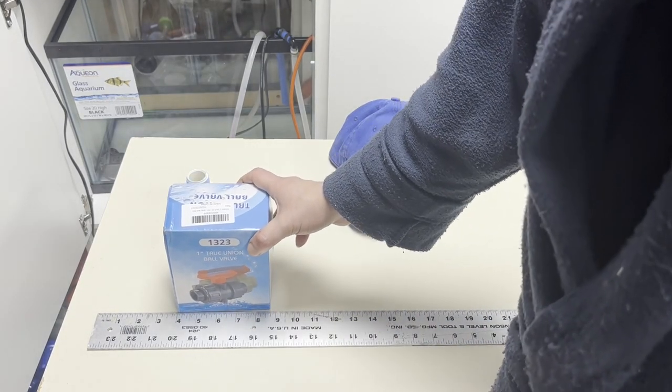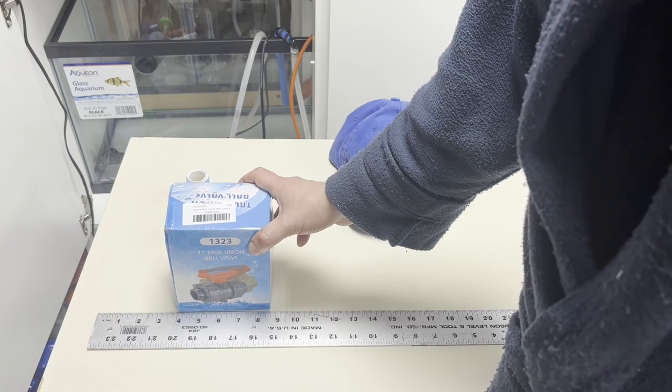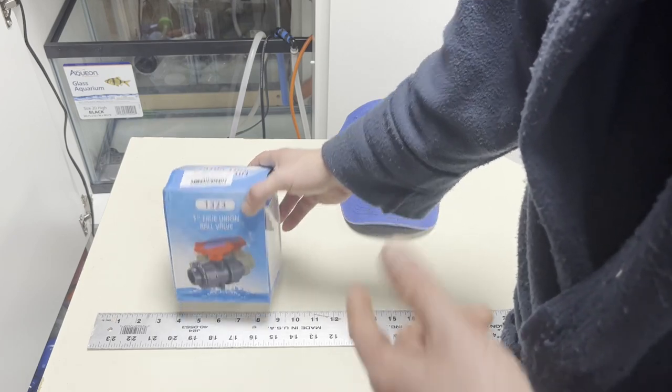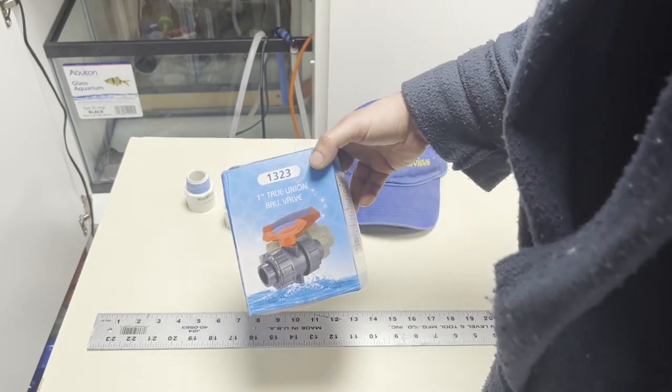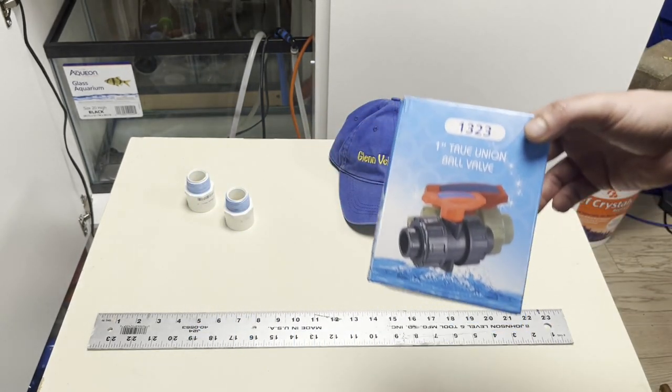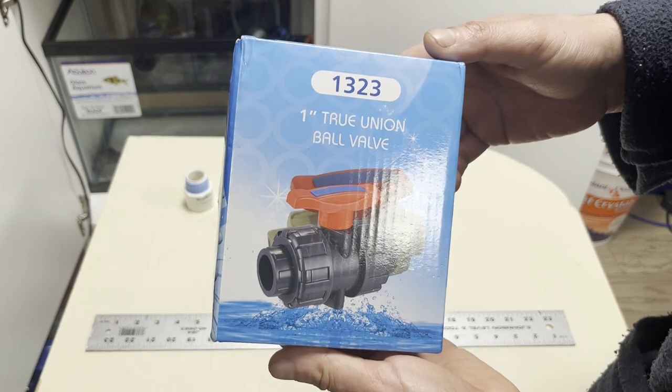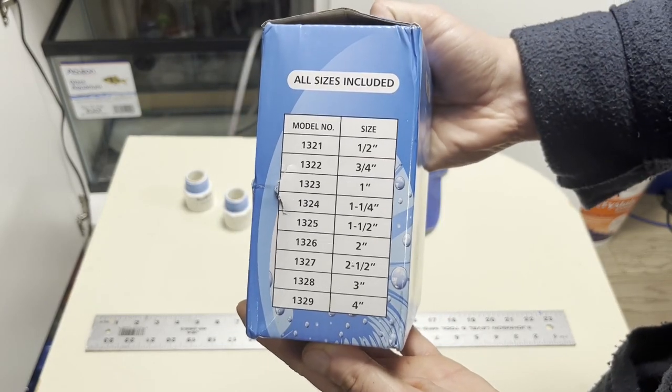They don't have anything like this at your local Home Depot or Lowe's from what I saw. They have this in two inch or something like that for irrigation applications, but that's it. So this is what the box looked like. This is the one that I got, so I just want to show you an unboxing.